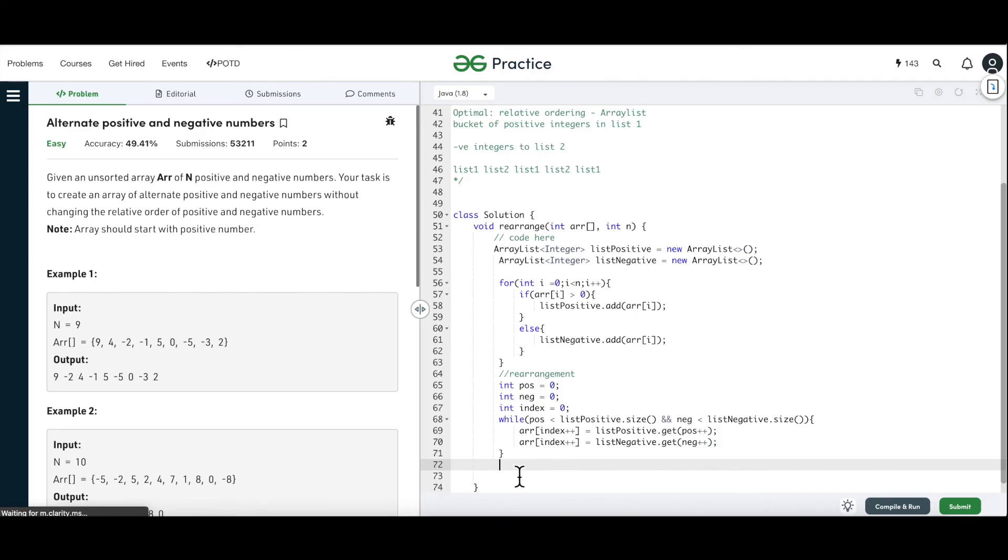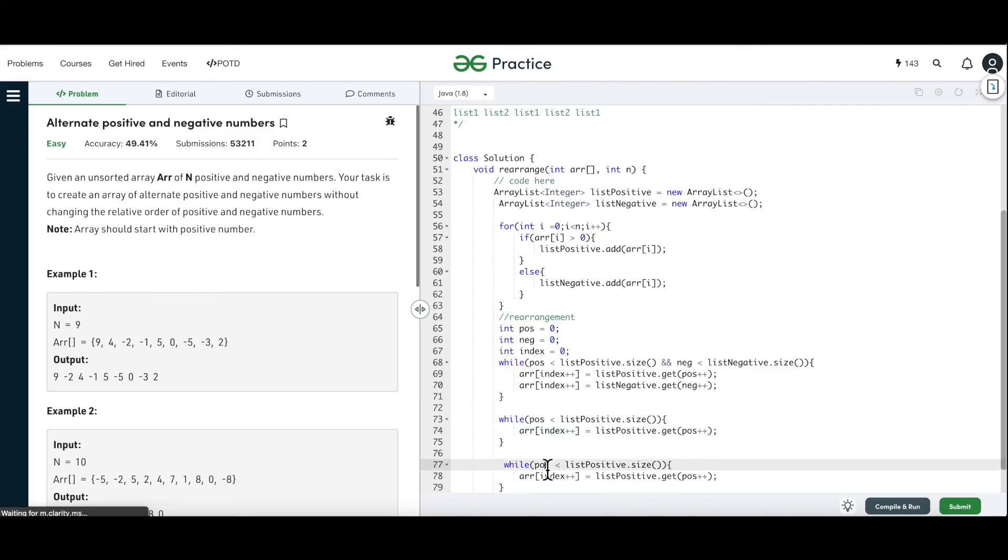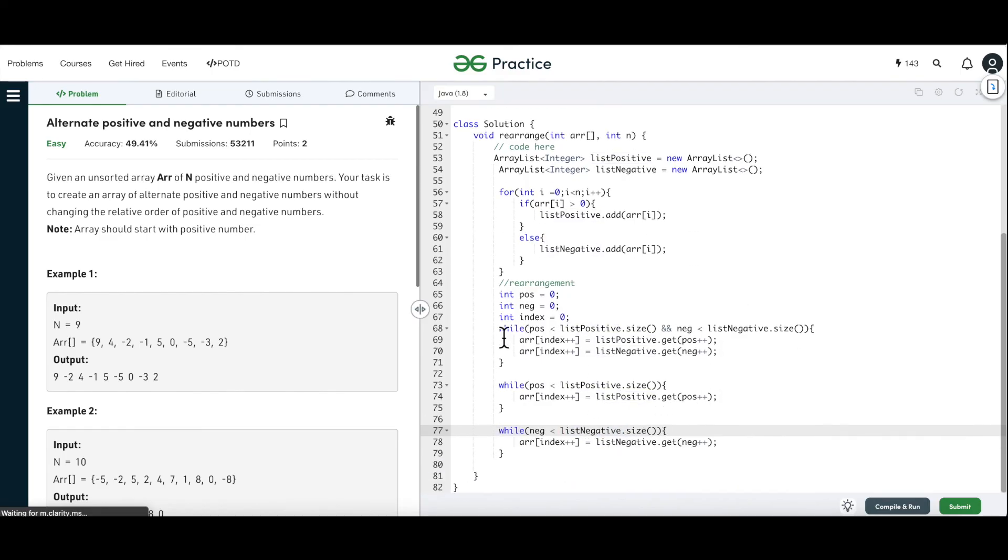Now outside of this while loop, if any of the lists exhaust, we have to continue the same thing for the extra items that is there in any of the lists. We will just copy this and we will do the same operation. And again, I will just copy this and we will do this for the negative list also. Yeah, that's it. So once all of this is done, our arrange, so once all of this is done, our array should be rearranged.